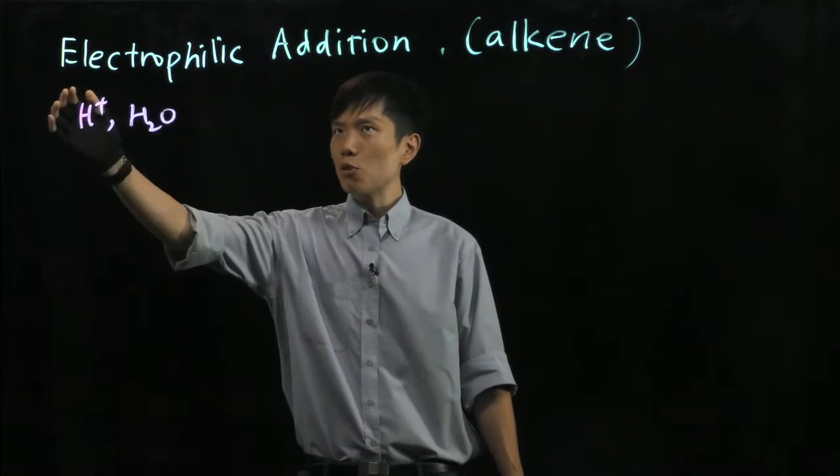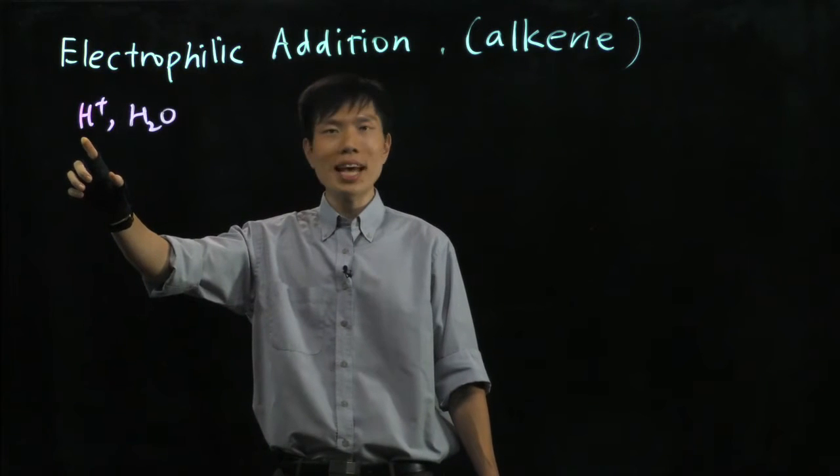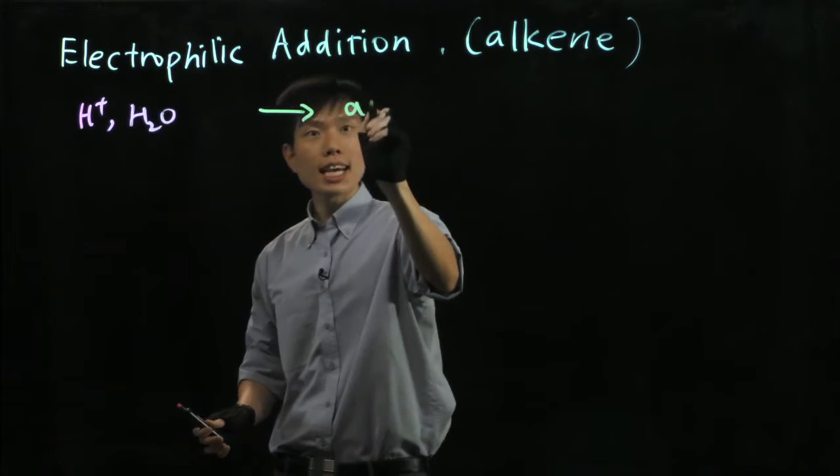As we know, in the electrophilic addition of alkene, using the reagents H+ from an acid and water, we are trying to convert the alkene into the alcohol.